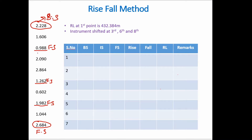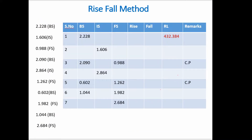Since the instrument was shifted after each foresight, the reading immediately after each foresight becomes a backsight. So the readings following the third, sixth, and eighth positions become backsights. The remaining readings are intermediate sights. Once this classification is done, all readings can be entered into the table.